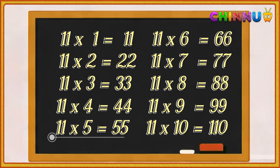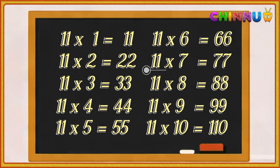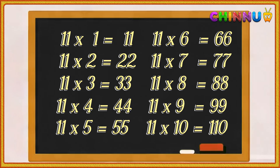11 fives are 55. 11 sixes are 66. 11 sevens are 77. 11 eights are 88. 11 nines are 99. 11 tens are 110.